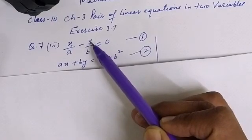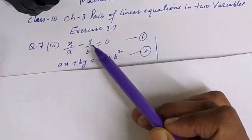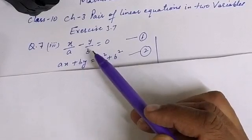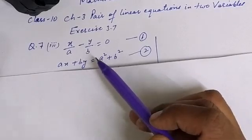So it becomes here, b cancelled with 1b, so yb it will be becoming afterward. So yb and by is the same thing only. So first equation we will multiply with b square, so we get the coefficient of y as same.